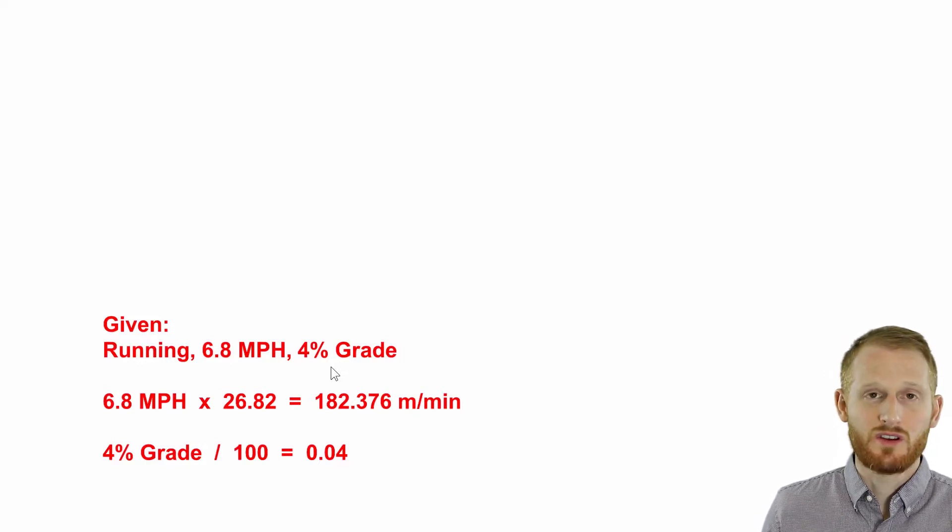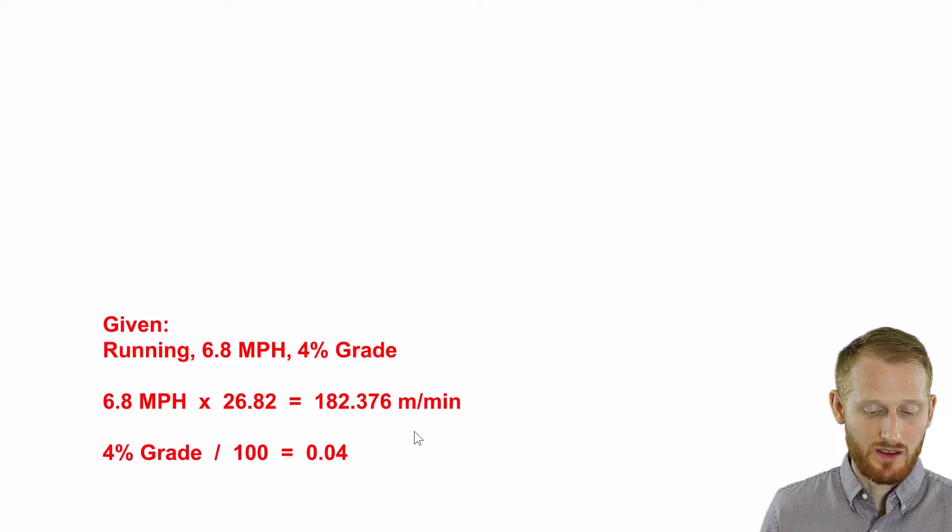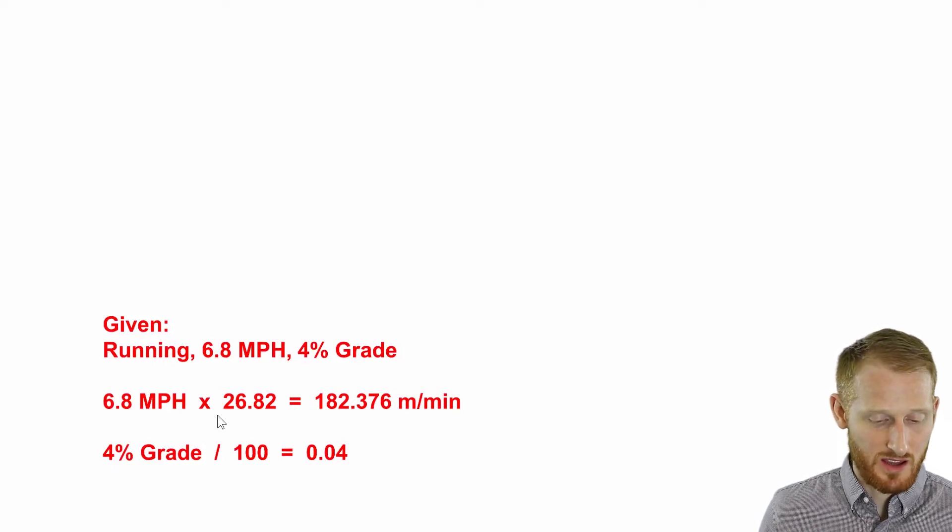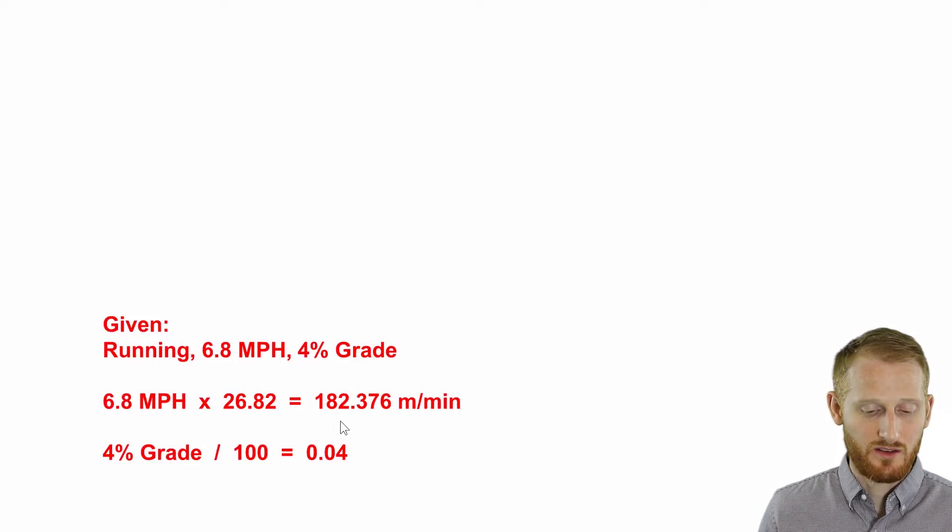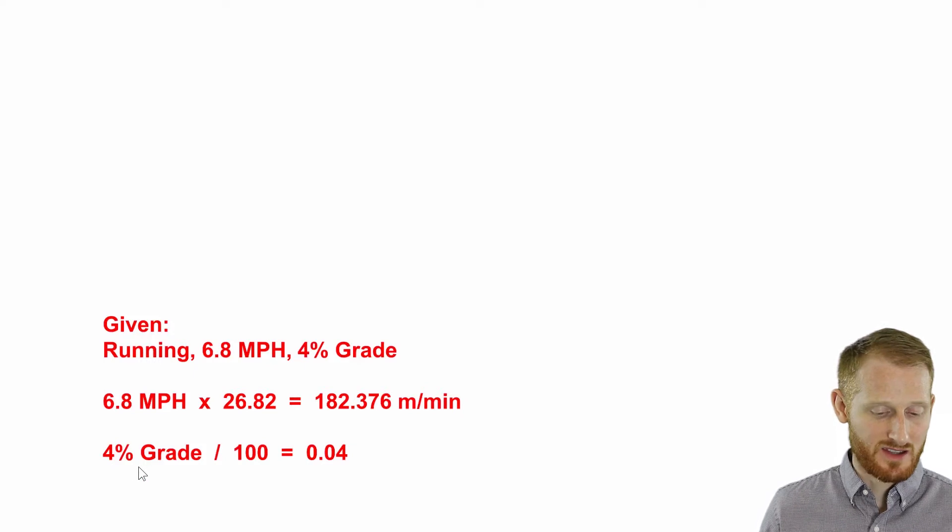So the first thing I'm going to do is calculate what 6.8 miles per hour is in meters per minute, because that's what the ACSM equation requires is meters per minute as the unit. So 6.8 times the conversion factor of 26.82 is going to give us 182.376 meters per minute.